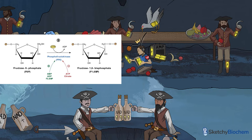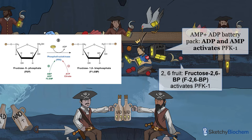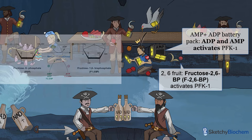Therefore, AMP and ADP will activate PFK1 to stimulate glycolysis and make ATP — just like how our PFK1 cast member is getting pumped up from the music coming from the AMP right next to that ADP battery pack. PFK1 is also activated by fructose-2,6-bisphosphate, or F2,6-BP, which is produced by a separate enzyme called PFK2. We'll explain why when we talk about gluconeogenesis.